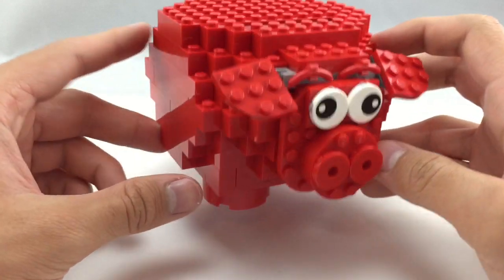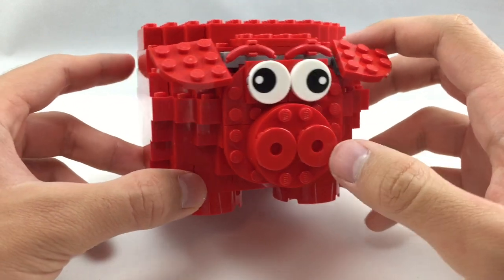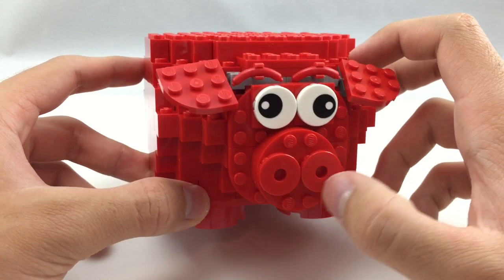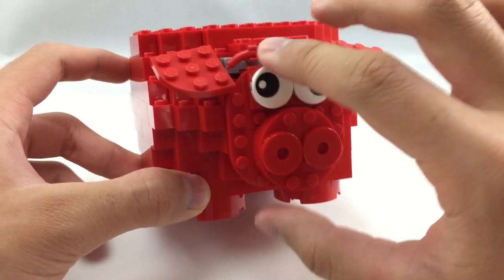He looks a little bit derpy there. And then he even has a little snout right there which uses those modified circular tile pieces with the little hole in the middle. So that comes out very well.